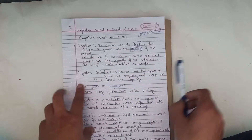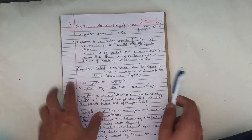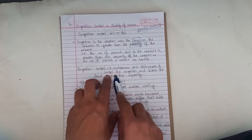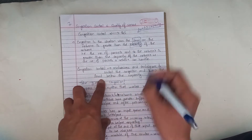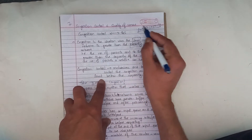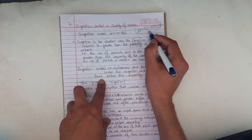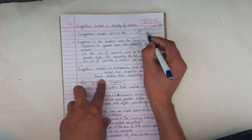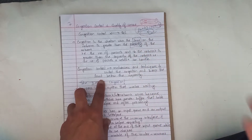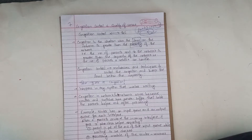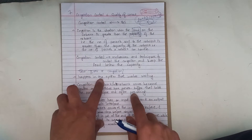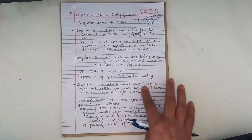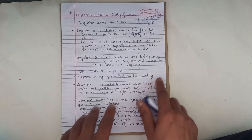Congestion control refers to mechanisms and techniques to control congestion and keep the load below the capacity of the network. The condition to avoid congestion is load less than capacity, so you have to keep mechanisms in place to ensure this.